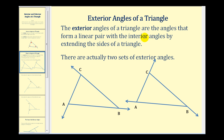The exterior angles of a triangle are the angles that form a linear pair with the interior angles by extending the sides of a triangle. There are actually two sets of exterior angles based upon which sides you extend. For example, at vertex C, on the left triangle we extended side BC through vertex C, and on the right triangle we extended side AC through vertex C. You can think of one set of extensions going counterclockwise and the other set going clockwise.